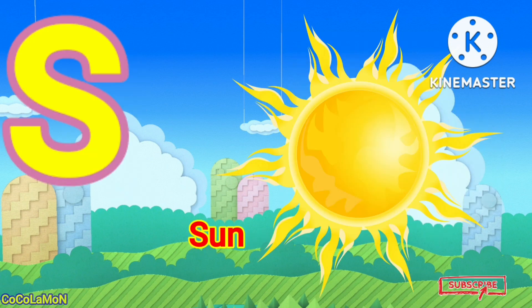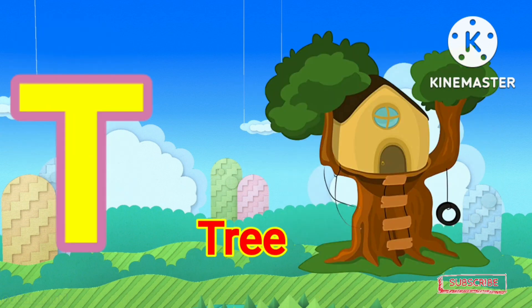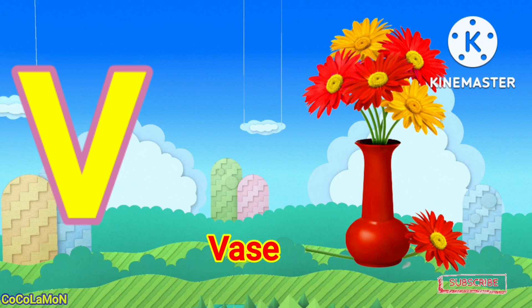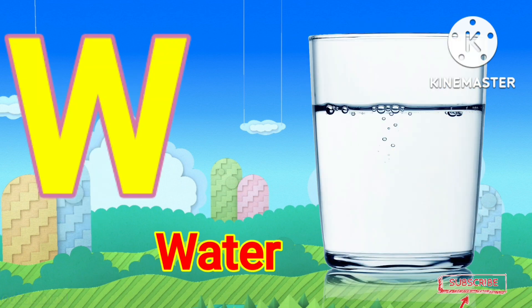S is for sun, D is for tea, U is for unicorn, E is for wrist, W for.